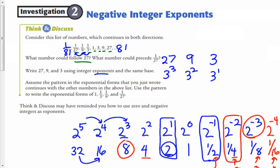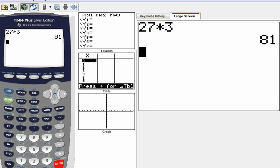And then it says assume the pattern continues with the other numbers. Use the pattern to write the exponential forms of 1, 1 third, 1 ninth, and so on. So 27 right here is 3 to the third. 9 is 3 to the second. 3 is 3 to the first. So if I follow that pattern, 1 must be 3 to the 0. And then going backwards, 1 third must be 3 to the negative first because the exponents are decreasing by 1. And 1 ninth must be 3 to the negative second. And 1 twenty-seventh must be 3 to the negative third. And 1 eighty-first must be 3 to the negative fourth. And you can check that on your calculator.